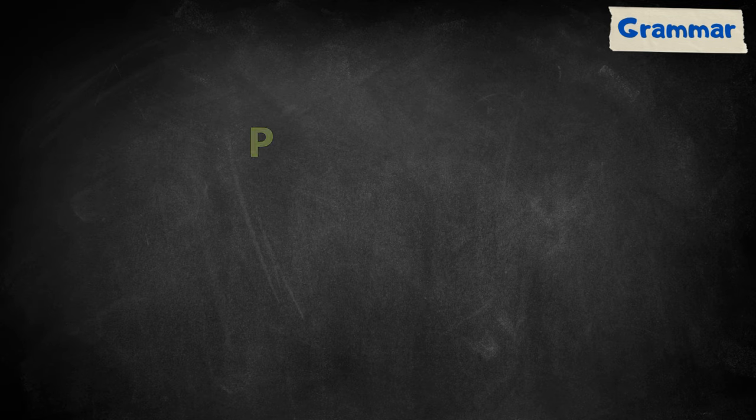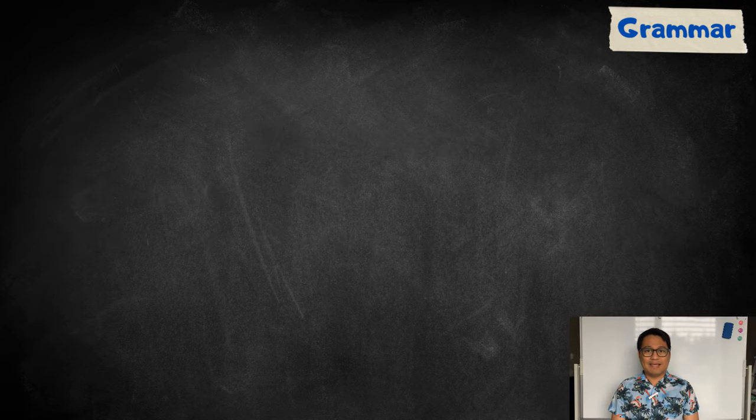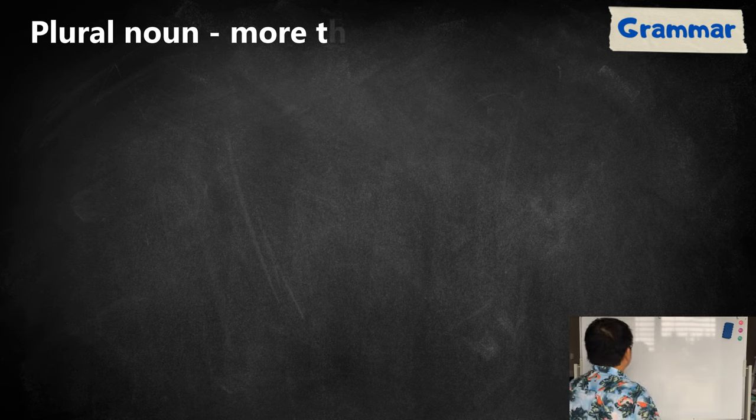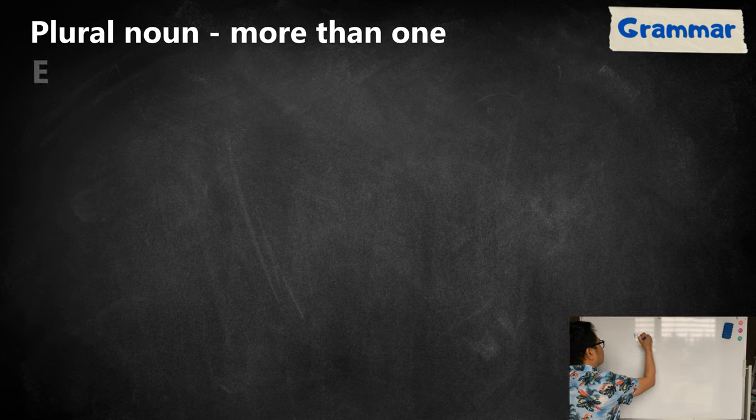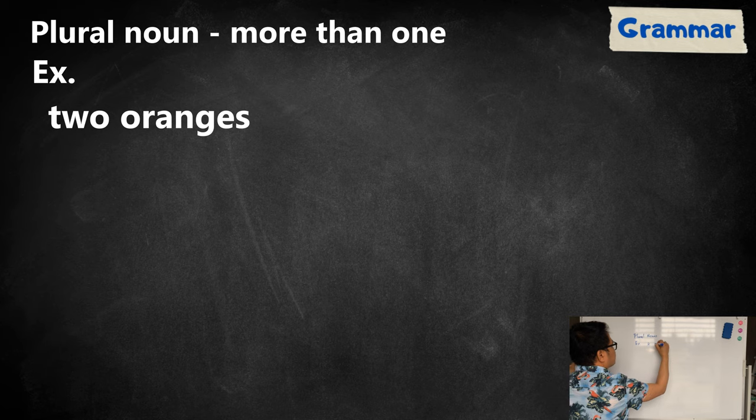Plural nouns are words used to indicate that there is more than one person, place, or thing. For example, two oranges, four feet.